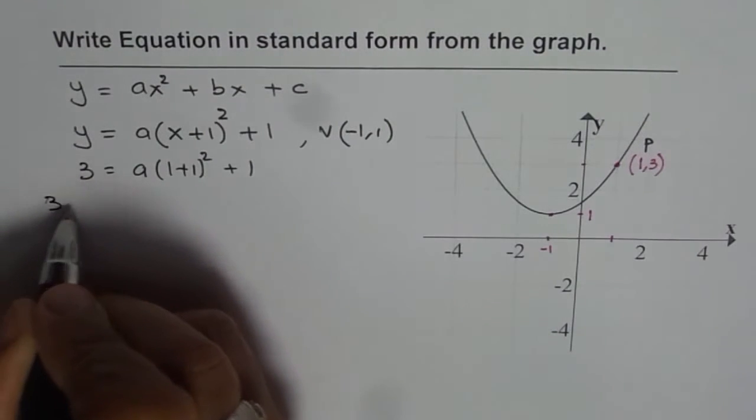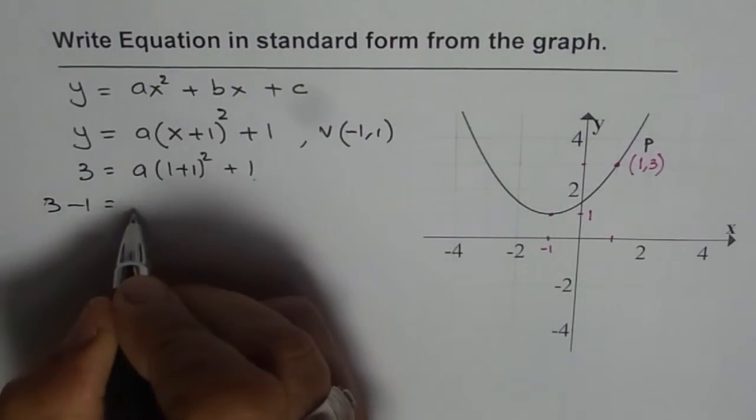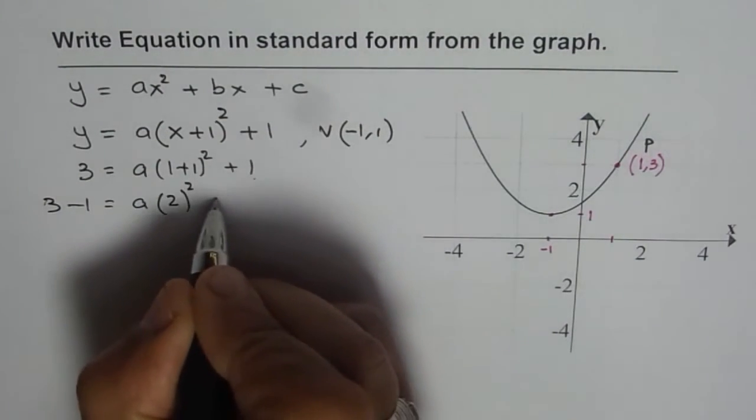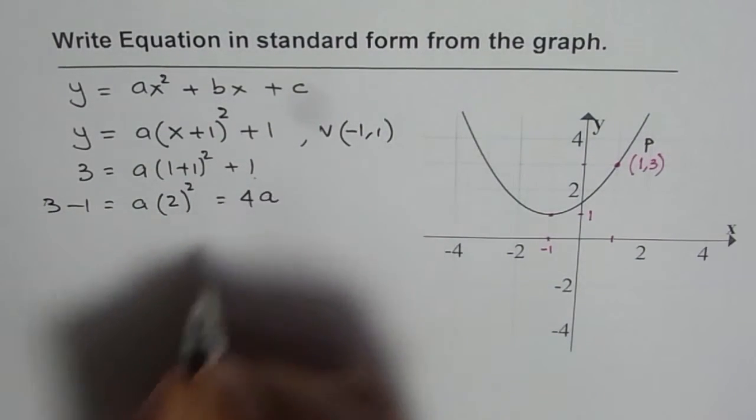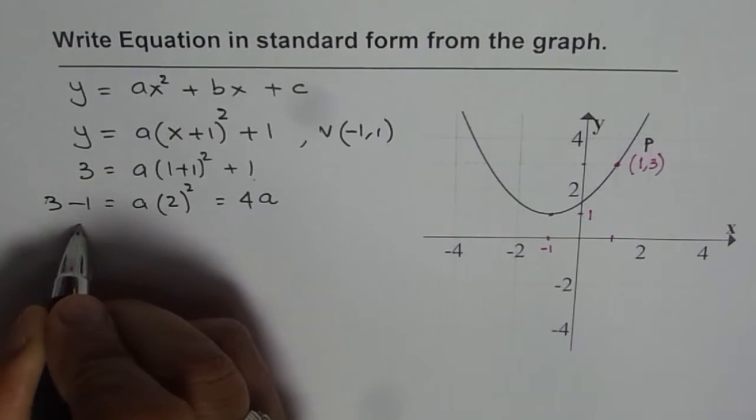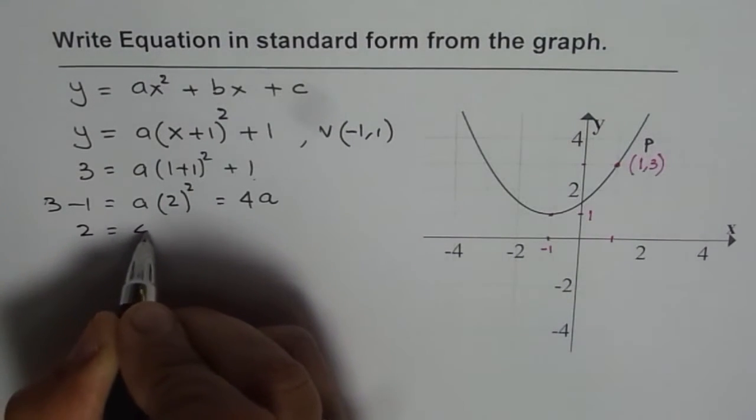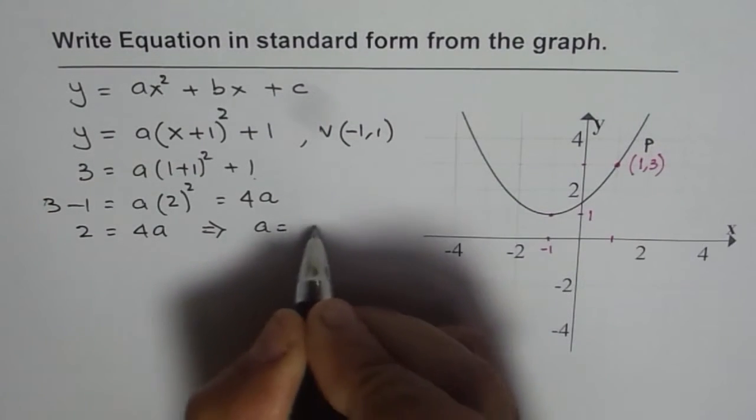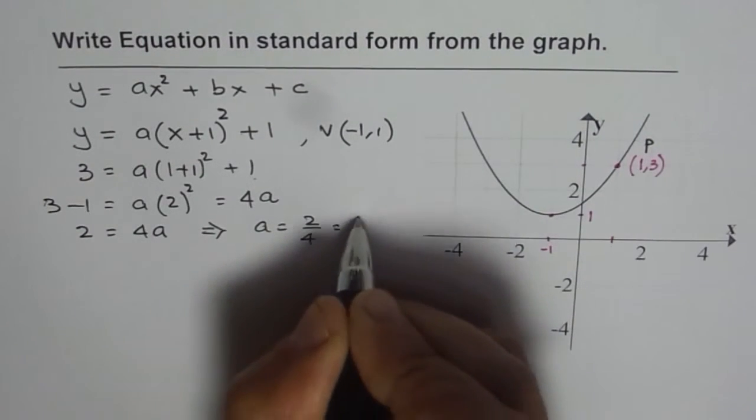So we get 3 minus 1, bringing this one to the left side. a times (1 + 1) is 2, 2 squared or you can say 4a. 3 minus 1 is 2, so 2 equals 4a. That implies that a is equal to 2 over 4 which is half.